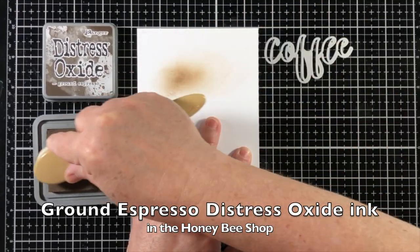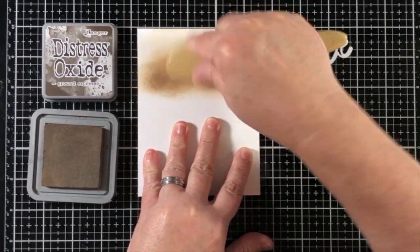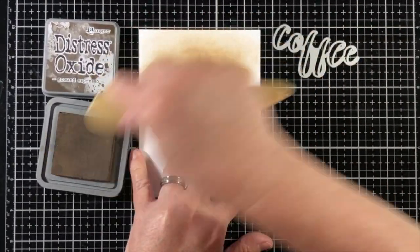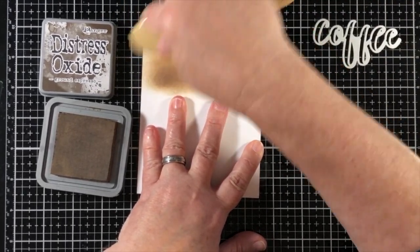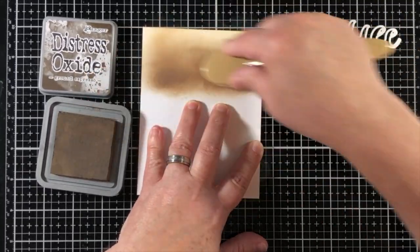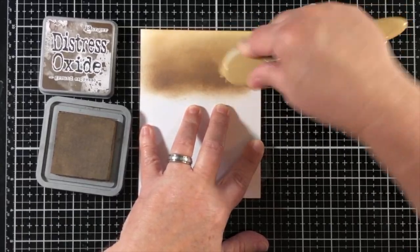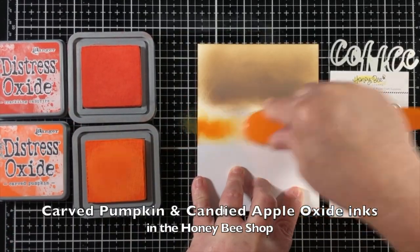I'm going to start out by using a panel of 110 pound cardstock and I'm going to add several different areas that I'm going to do ink blending. I decided to use one panel which is four and a quarter by five and a half to do all my ink blending just to not waste any paper. So that's why we've got ink blending in certain areas.